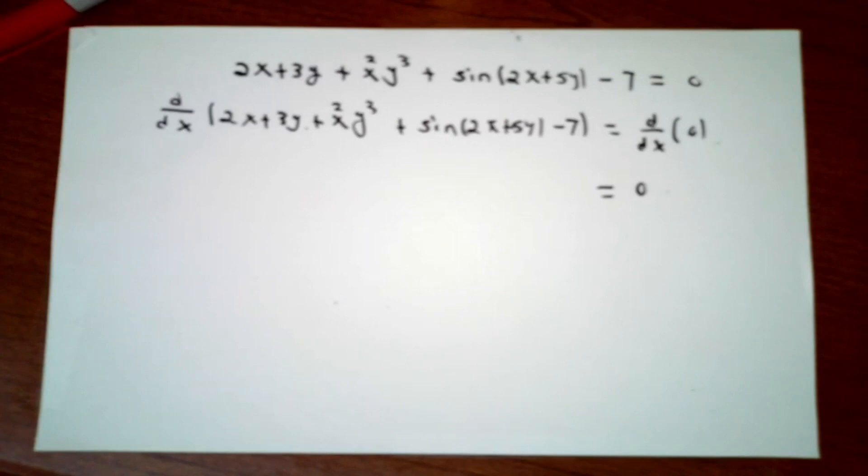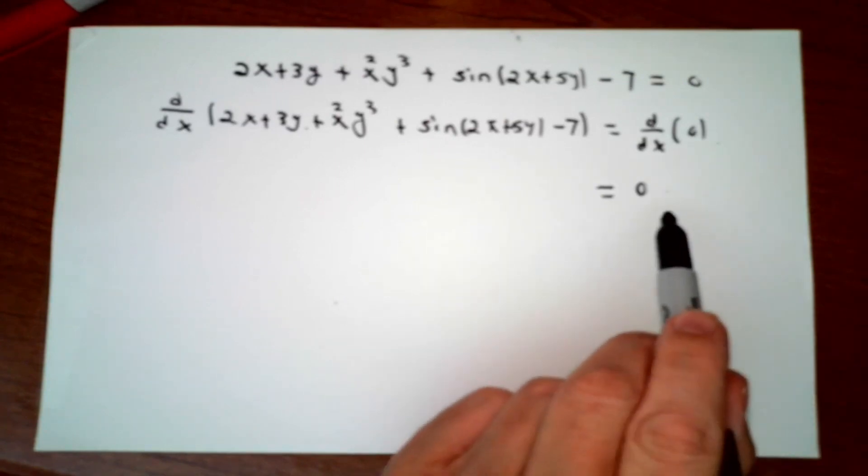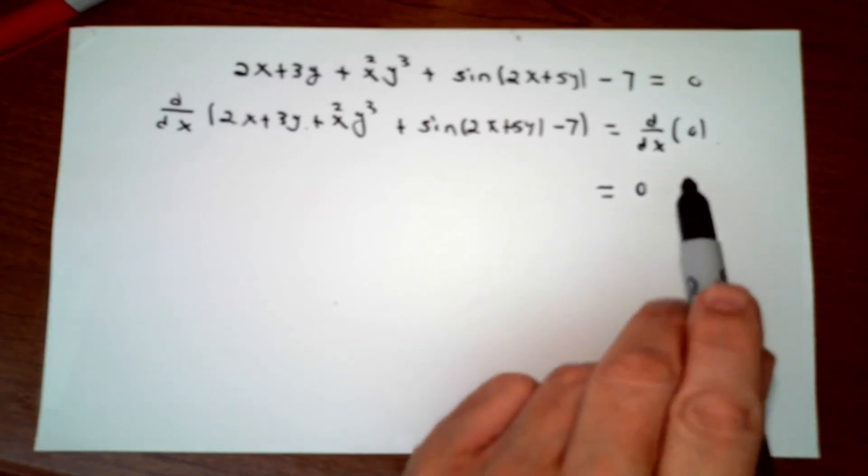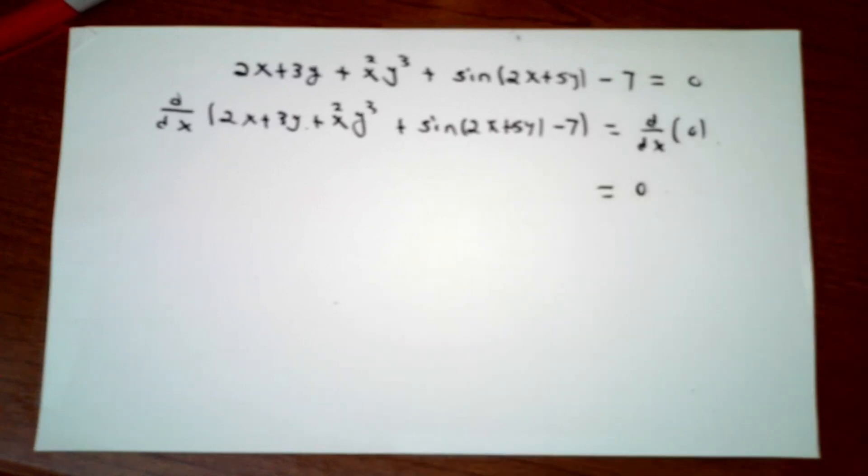If we differentiate both sides, on the right we'll have a 0 because the derivative of a constant is 0. On the left, I'm thinking of x as being the independent variable and y as being something that depends on x. The derivative of 2x is easy. In the next term, I have 3 times y. The derivative of that is 3 times the derivative of y, so that's not so bad.